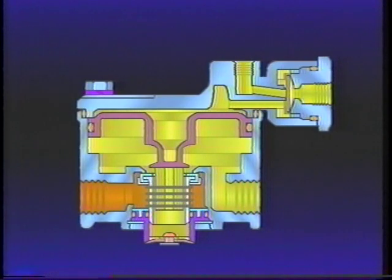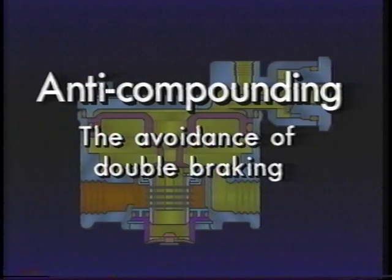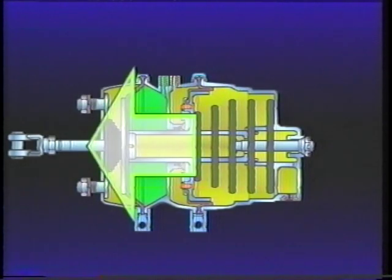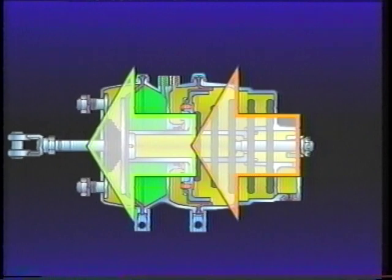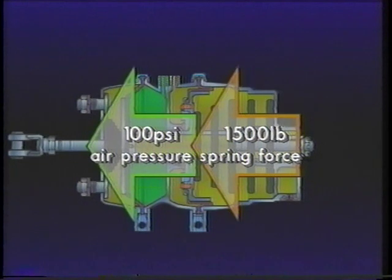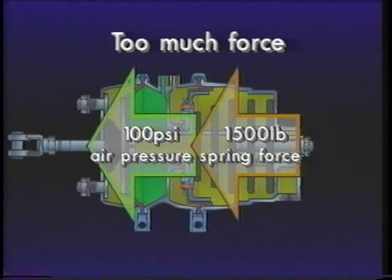Anti-compounding, simply defined, means the avoidance of double braking. It prevents the simultaneous application of service brakes and emergency or parking brakes. The compounding of spring force and air pressure creates too much force that could possibly damage brake components. The R14 prevents this from occurring.